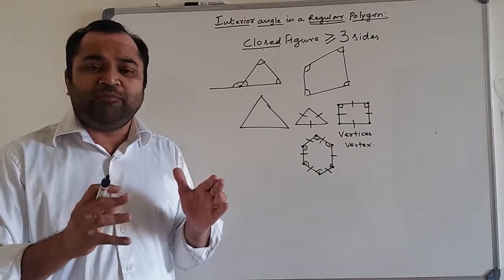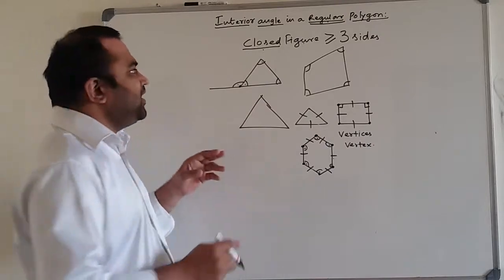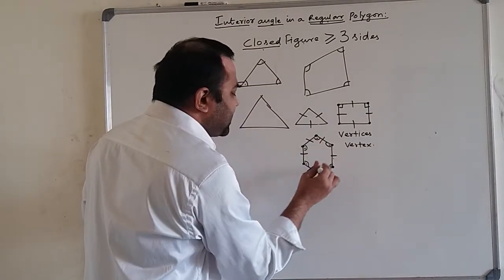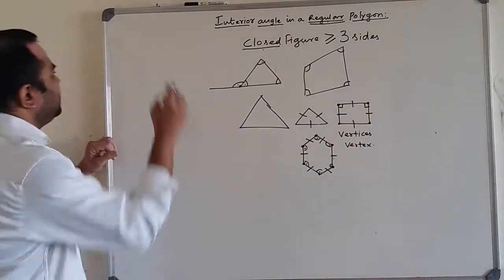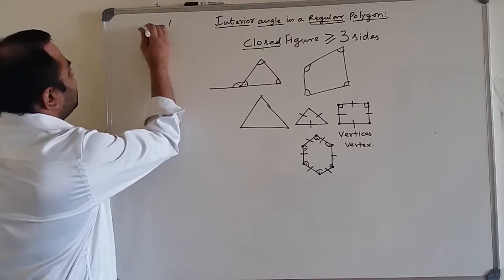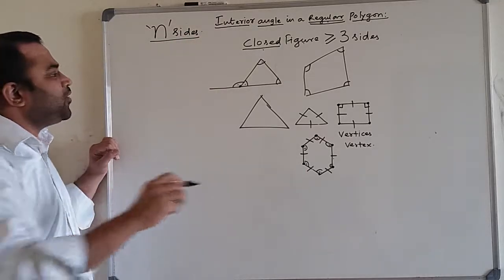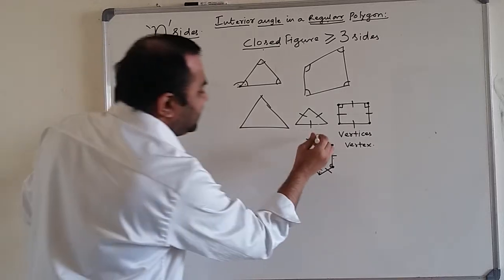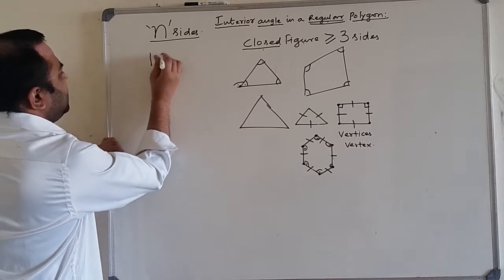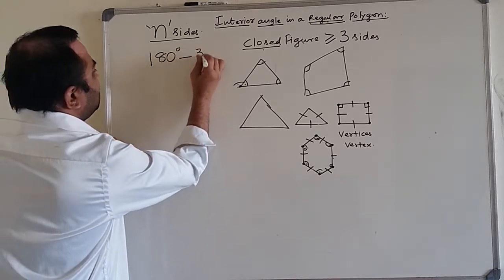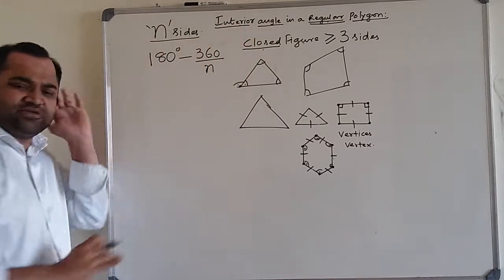There is a formula for finding each interior angle in any regular polygon. If there are n sides — let n be the number of sides in a regular polygon — then the formula for each interior angle measure is: 180 degrees minus 360 divided by n.